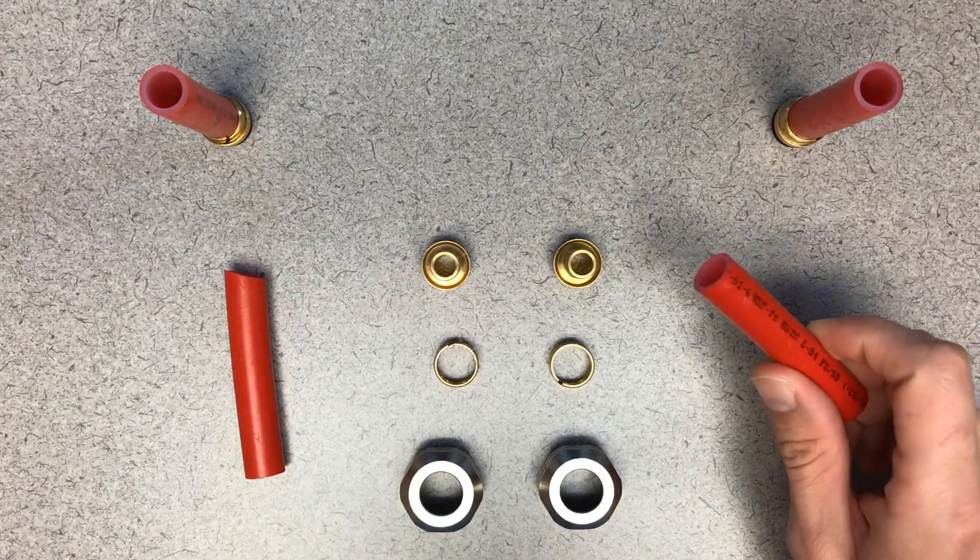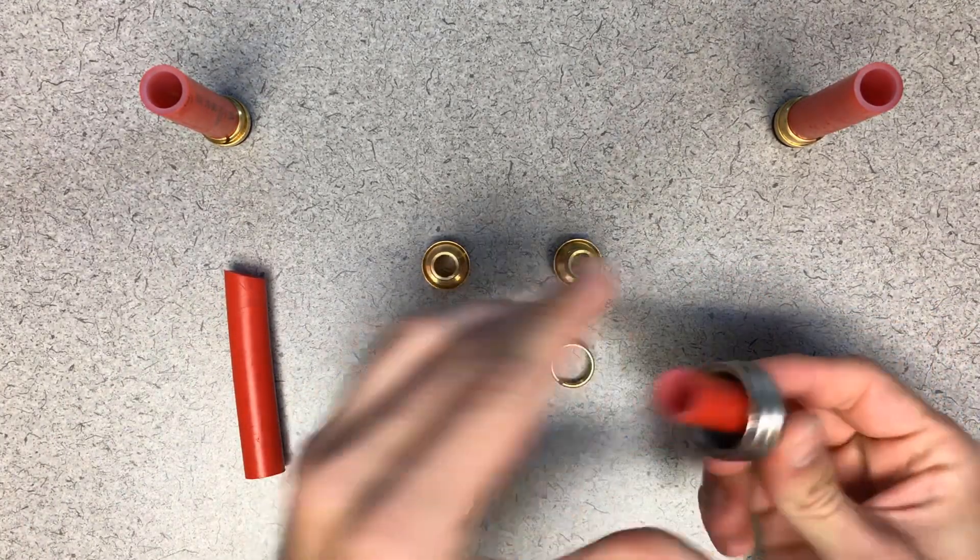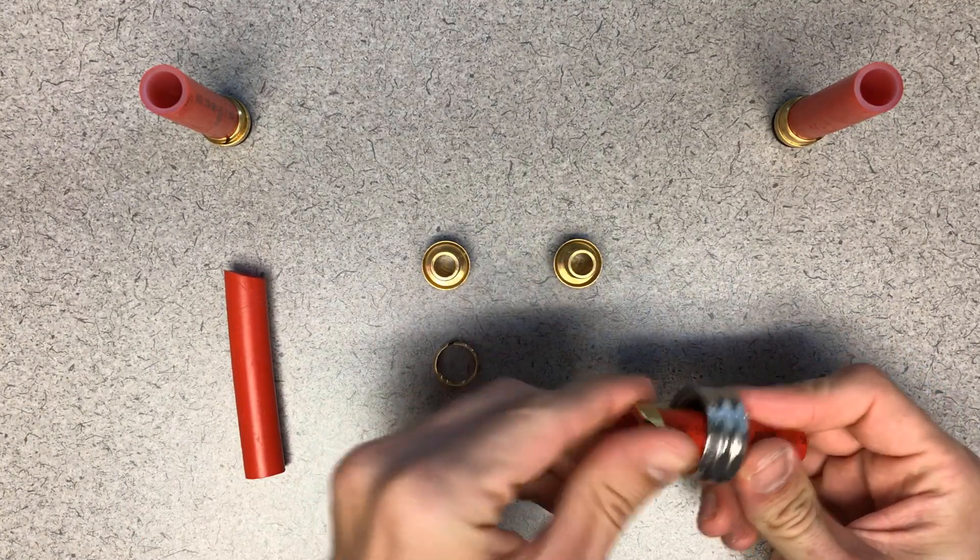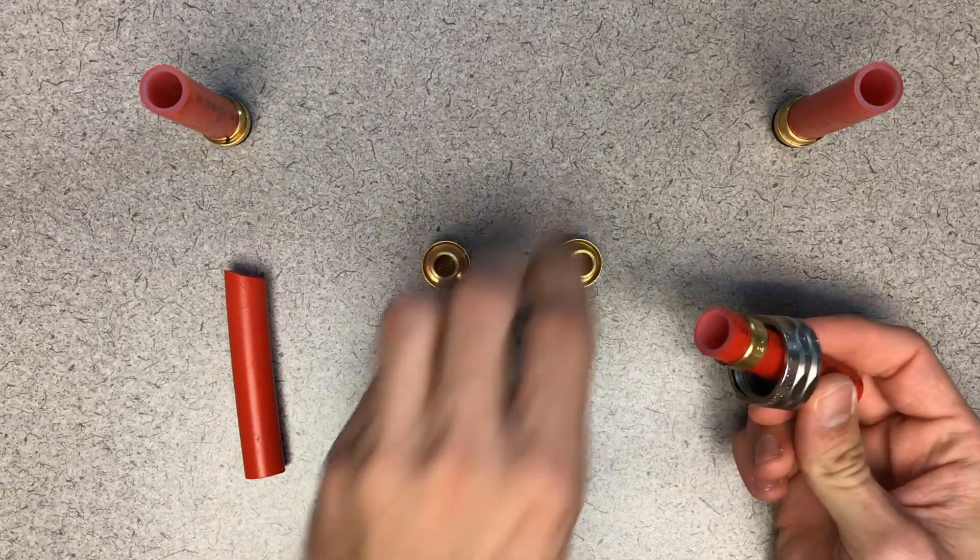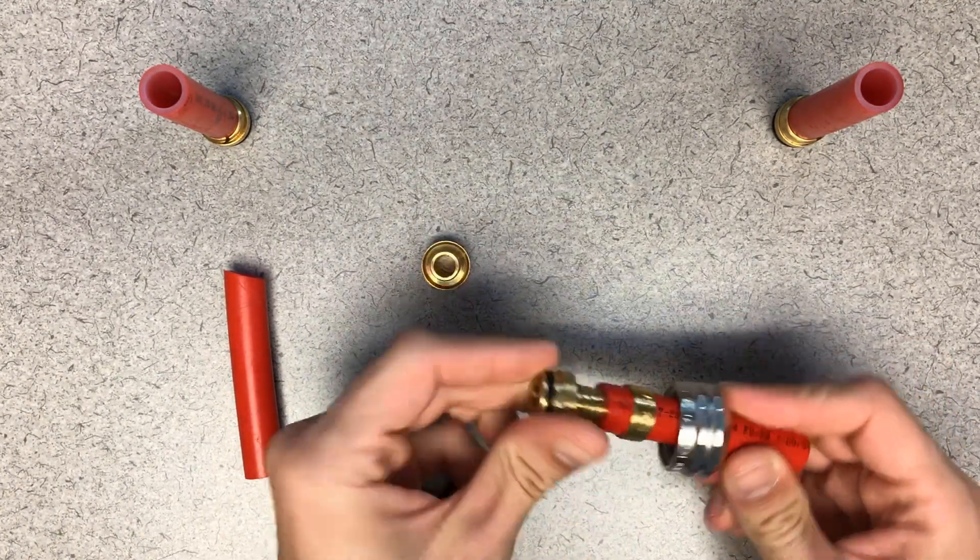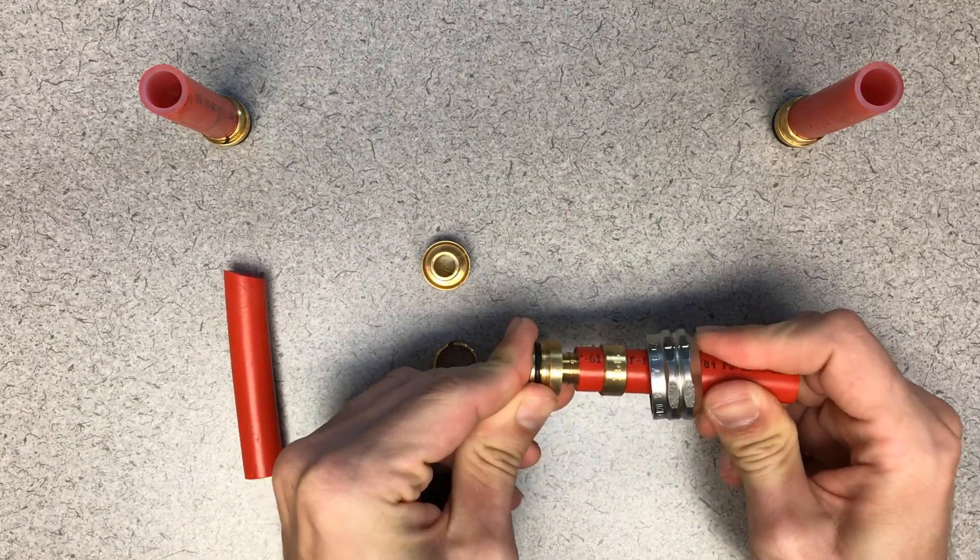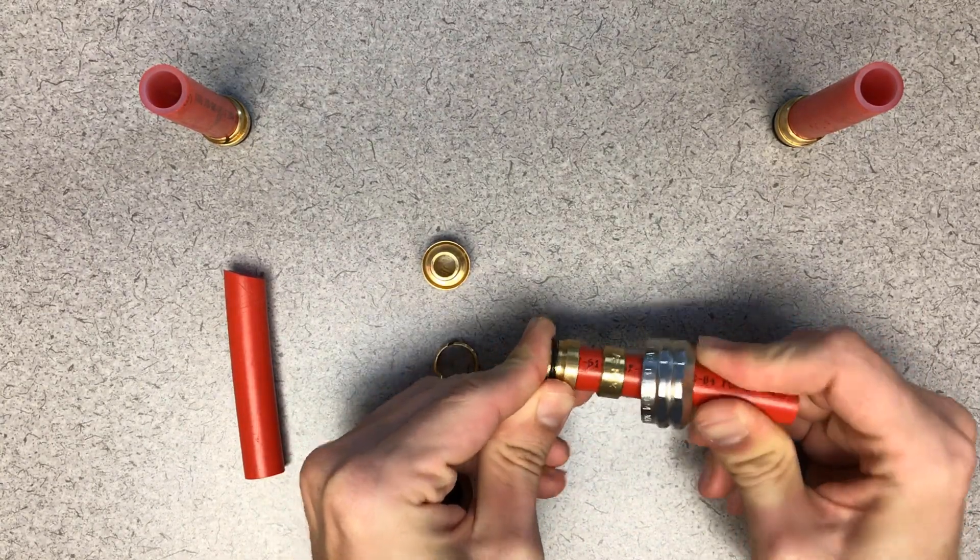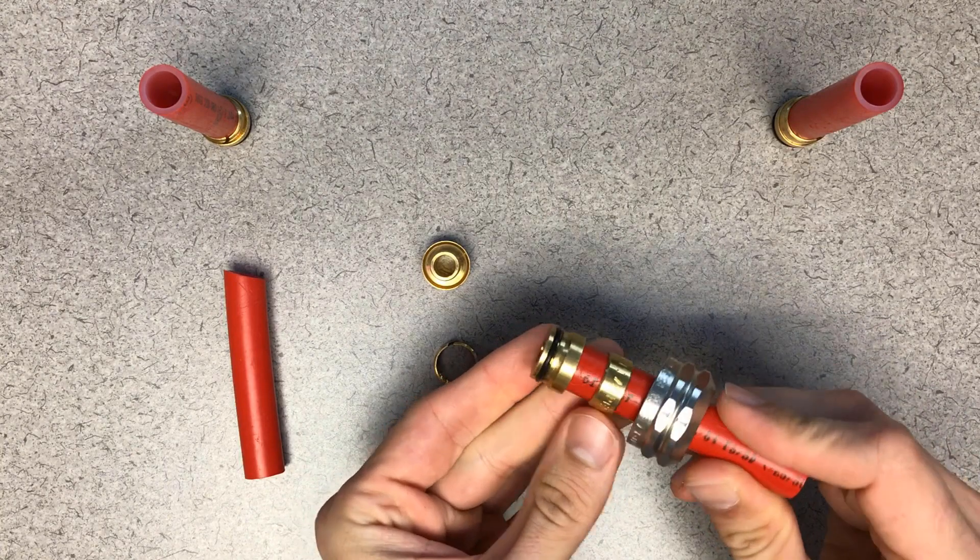So the next thing I'm going to do, I'm going to put the compression nut on, followed by the split brass ring, and then the fitting with the O-ring. So it will slide to about right there. That looks like you're done.